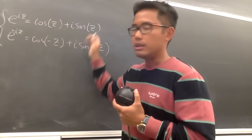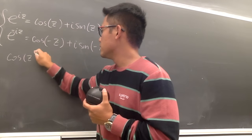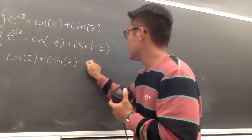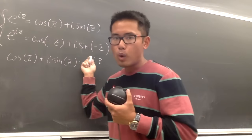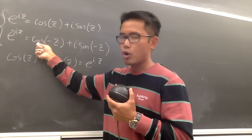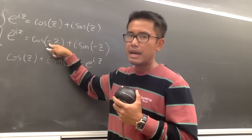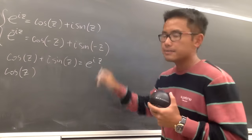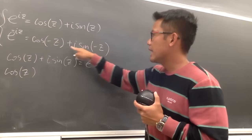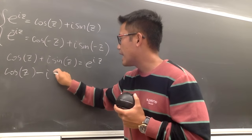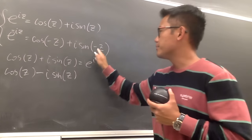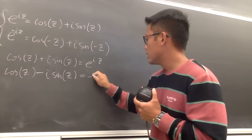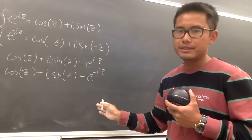I'll keep the first equation as e to the iz equals cosine z plus i sine z. For the second, cosine is an even function so cosine of negative z is just cosine z. Sine is an odd function, so sine of negative z becomes negative i sine z — and this equals e to the negative iz.